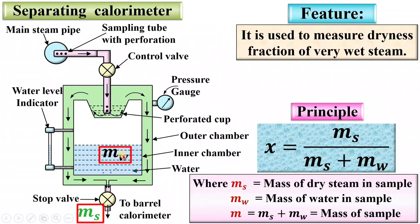Once you have obtained mw and ms, you can definitely find the dryness fraction of the steam using this formula. It is very simple.